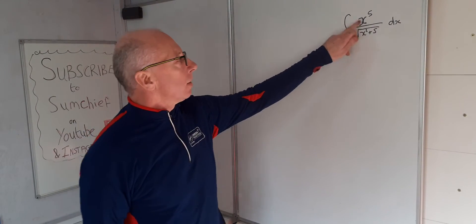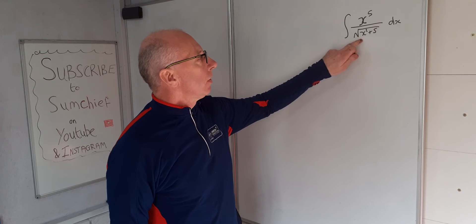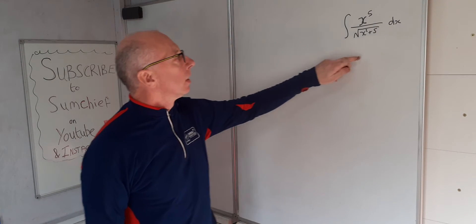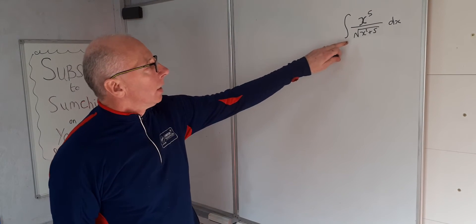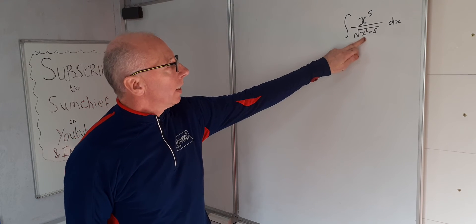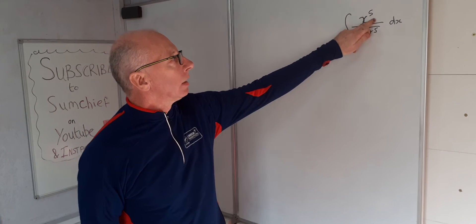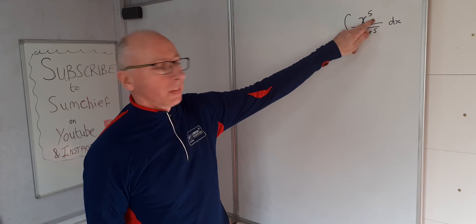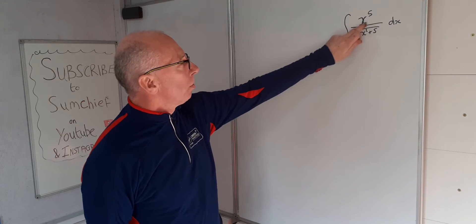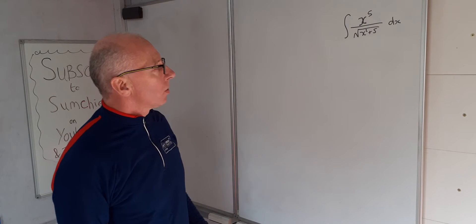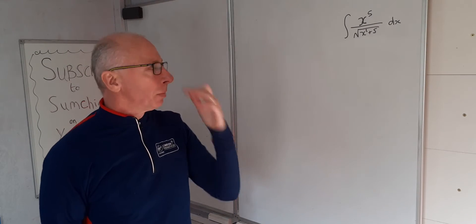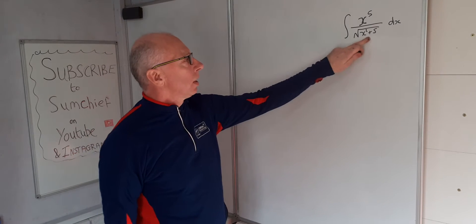We're going to integrate x to the power of 5 divided by the square root of x squared plus 5, with respect to x. We have a rational term on the bottom with an x squared and x to the 5 on the top, so a u-substitution is not going to make the x to the 5 disappear straight away — we'll have to play around a little bit.